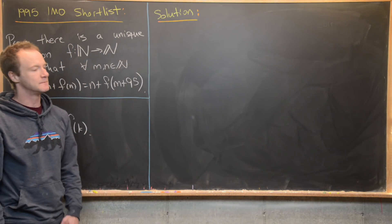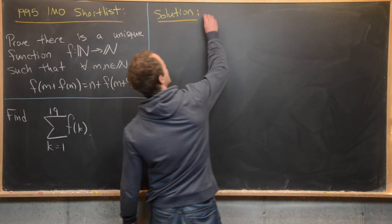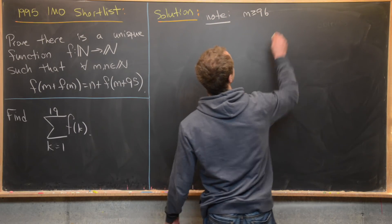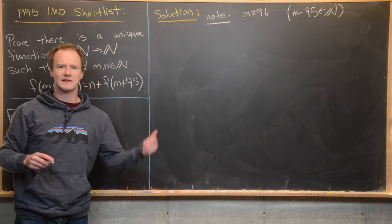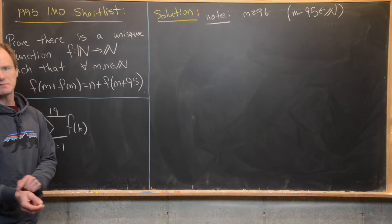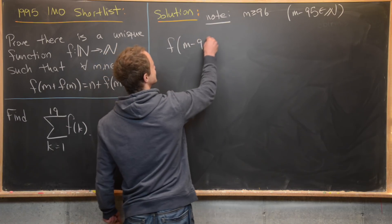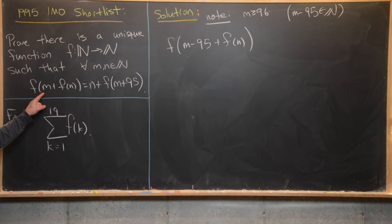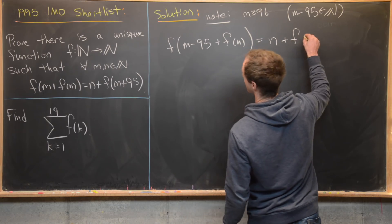Now we're ready to look at a solution. For my second hint, we're going to try to get rid of this 95, and we'll do that by making the following observation. If we have m ≥ 96, then m − 95 is a natural number, so we're allowed to plug it into the function. Replacing m with m − 95 in the functional equation gives us f(m − 95 + f(n)) = n + f(m).